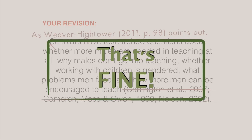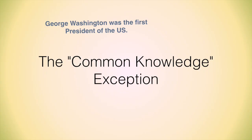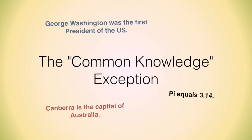There are other ways to commit plagiarism that I can't show them all to you, but just make sure you're citing any idea or words that aren't yours. The one exception for having to cite everything is what we call the common knowledge exception. If something is widely known and no one disputes it as a fact, you don't have to cite a source for it. This includes things like: George Washington was the first president of the United States, Canberra is the capital of Australia, and pi equals 3.14.